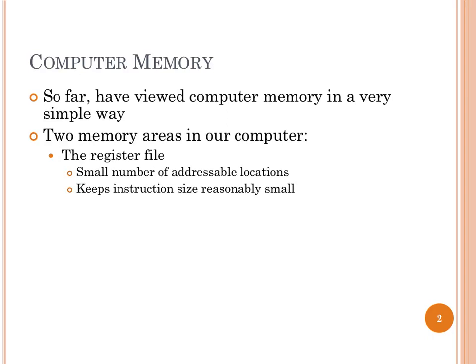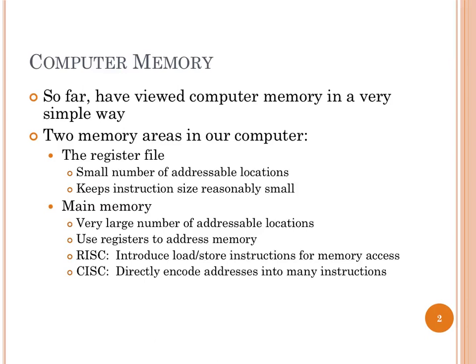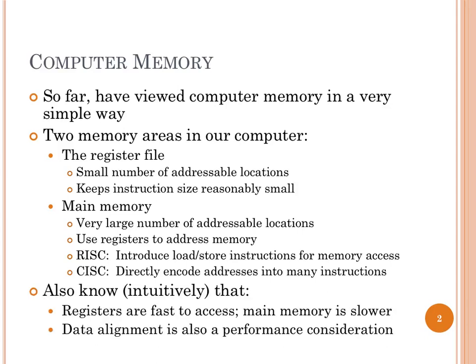We also intuitively think the register file is going to be fast, because it's registers. Now we have main memory, which is much, much larger. On x86-64 we have 48-bit addresses, whereas we only have 16 registers, so the address of a register is 4 bits. The address of something in main memory is 48 bits. We also talked about data alignment — if we're going to use a 64-bit data bus, then aligned accesses are probably better than non-aligned accesses. But so far we haven't really developed any sense of how this all behaves and why, and that's what we're going to talk about today.